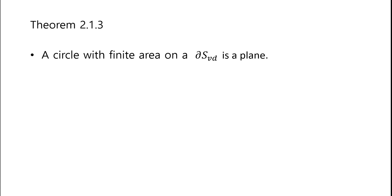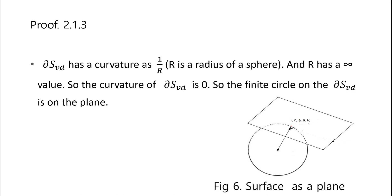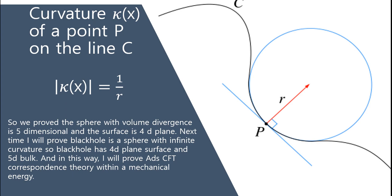Section 2.1.3: a circle with finite area on a DSVD subplane. Proof: DSVD has a curvature of 1/r, and r has an infinite value, so the curvature of DSVD is 0, so the circle on DSVD is on a plane. So we proved the sphere with volume divergence is 5-dimensional, and the surface is a 4D plane.